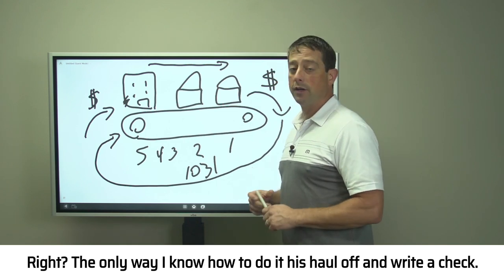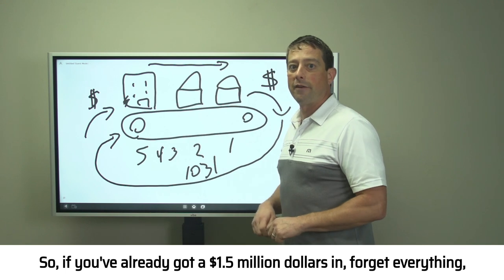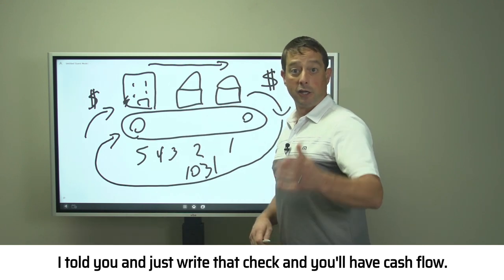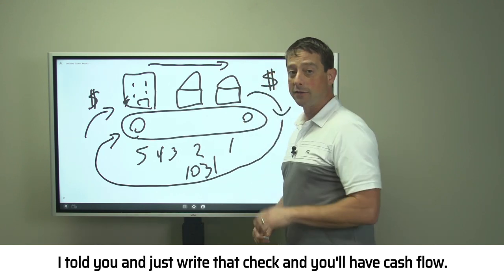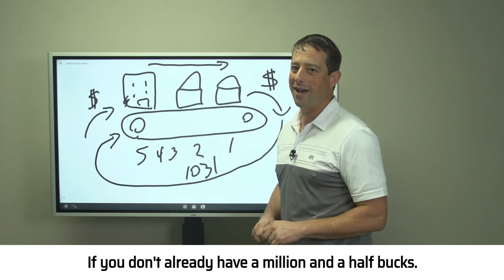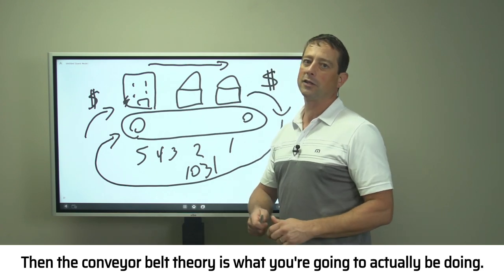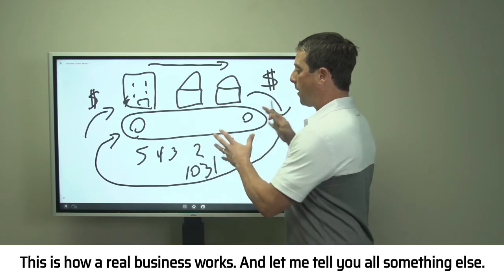The only way I know how to do it is haul off and write a check. So if you've already got a million and a half dollars, then forget everything I told you and just write that check and you'll have cash flow. If you don't already have a million and a half bucks, then the Conveyor Belt Theory is what you're going to actually be doing. This is how a real business works.